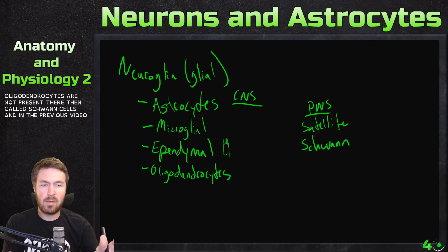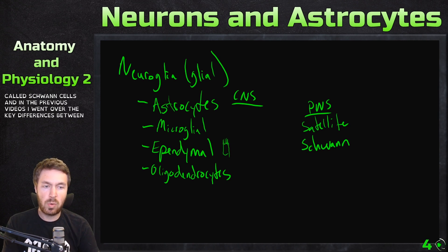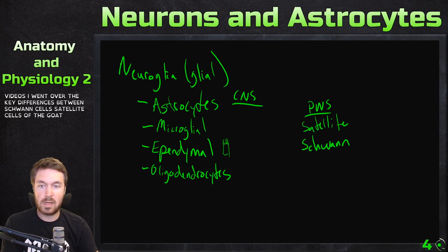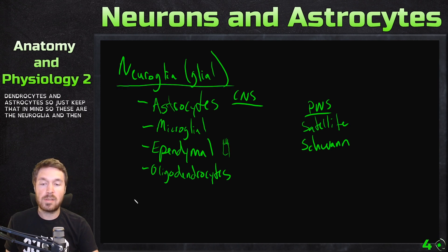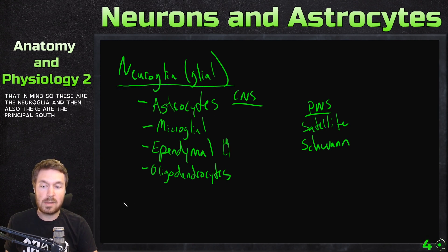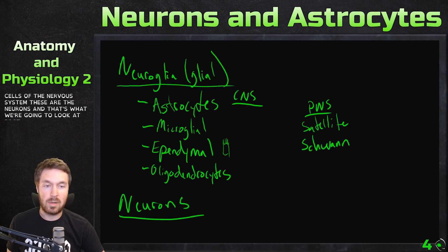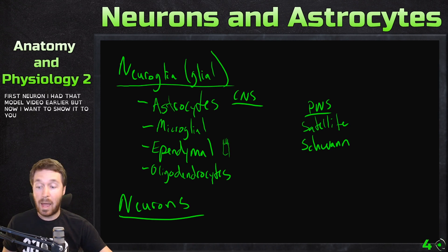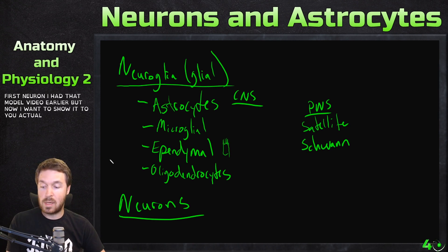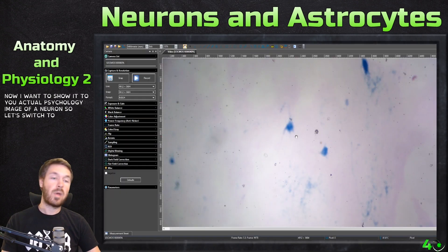In the previous videos I've gone over the key differences between Schwann cells, satellite cells, oligodendrocytes, and astrocytes, so just keep that in mind. So these are the neuroglia. And then there are also the principal cells, the main cells of the nervous system — these are the neurons, and that's what we're going to look at first. I had that model video earlier, but now I want to show you an actual cytology image of a neuron. So let's switch to the microscope here.